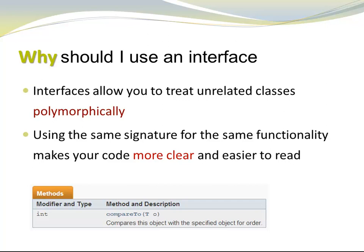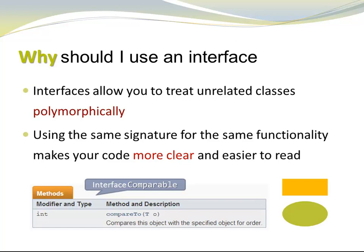Here is an interface method that is very frequently used. It's an interface method from the Java API — from interface Comparable. It's called compareTo, and it allows me to establish an order between different objects. I could have different methods like greater, heavier, or longer, but if we always use compareTo, then we have this uniform treatment, and many programmers know the behavior of compareTo. We could compare shapes, we could compare students, we could compare apple and orange trees. The important part is: interfaces allow us to have the same signature for a higher-level functionality, but each class can implement it in its unique way, and we can treat those different classes that are not related by inheritance polymorphically.